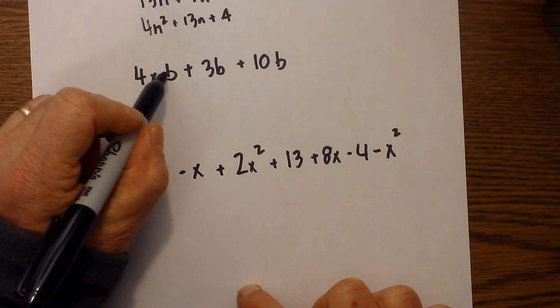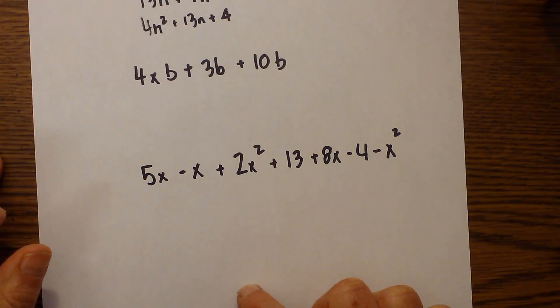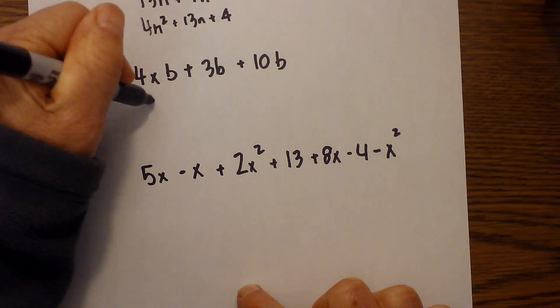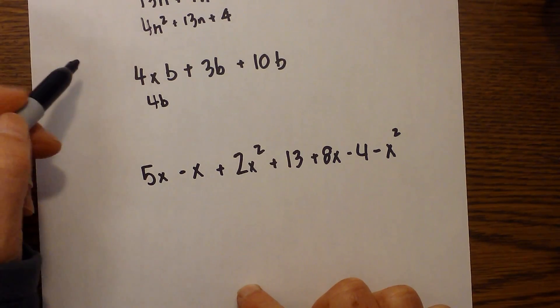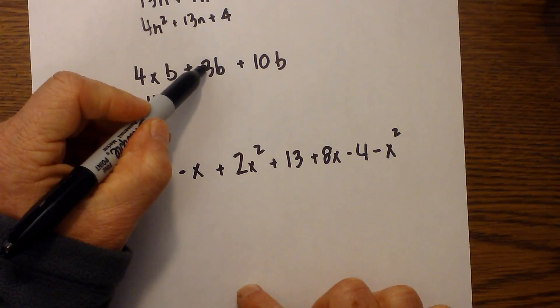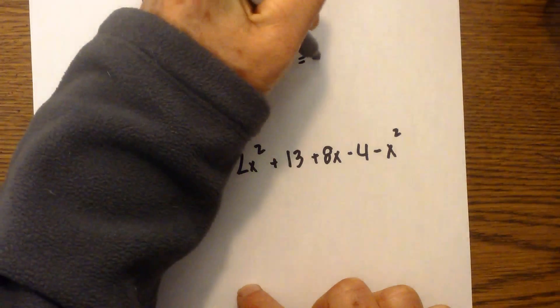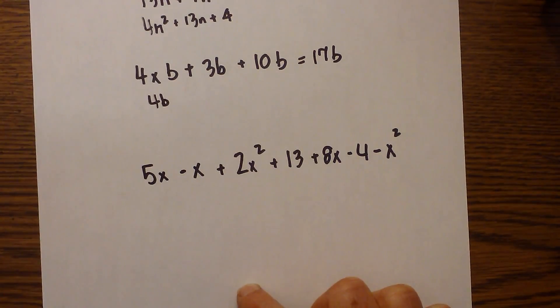We have 4 times b plus 3b plus 10b. And this is really pretty easy because we all have the same like terms. But I'm going to multiply 4 times b. So this becomes 4b. So now, I just added 4b plus 3b is 7b plus 10b is equal to 17b. Pretty straightforward there.